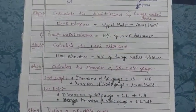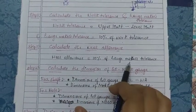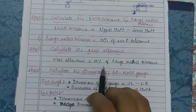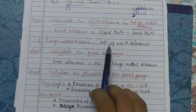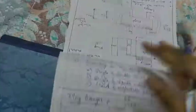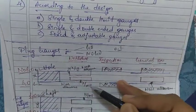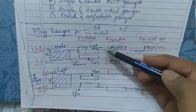Step 3 is to calculate the wear allowance. The wear allowance is 10 percent of the gauge maker tolerance calculated in Step 2. Overall, with respect to work tolerance, the wear allowance is 1/100 of the work tolerance. As shown in the figure: x/10 gives gauge maker tolerance, and x/100 gives wear allowance, applicable for both go and no-go gauges with respect to hole and shaft.